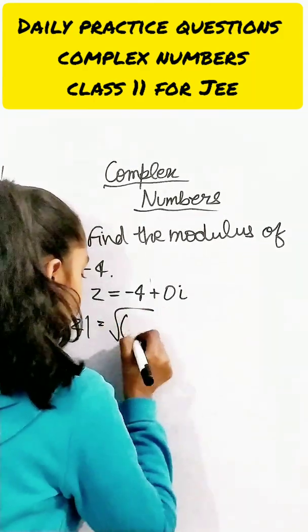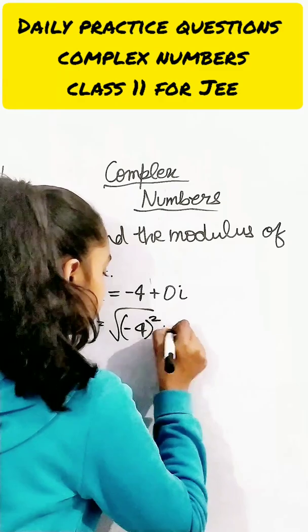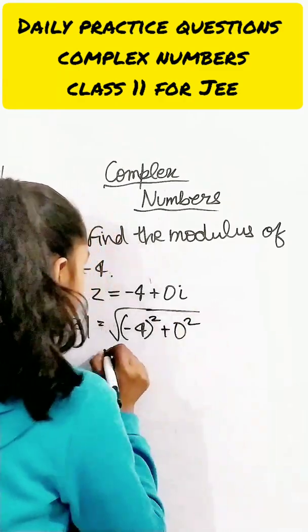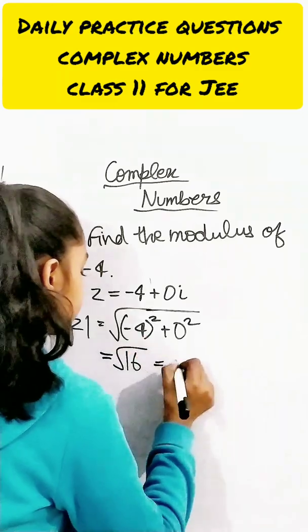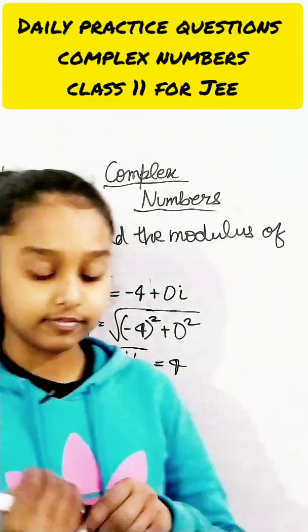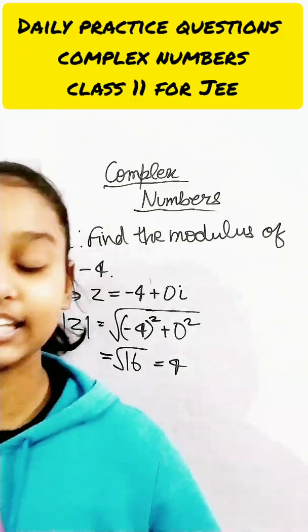Yes, it's going to be negative 4 squared plus 0 squared. Negative 4 squared will be positive, so we've got 16, and root 16 is equal to 4. So modulus of negative 4 is positive 4. Thank you.